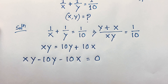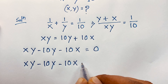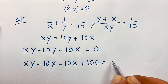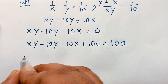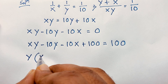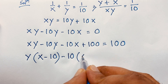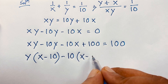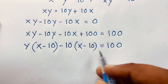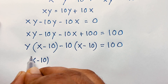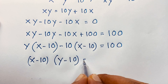I move the terms to one side. So here: xy minus 10y minus 10x equals 0. I add 100 to both sides. Now y is common, so taking y as common gives y times (x minus 10). And 10 is common in the other terms: minus 10 times (x minus 10) plus 100. So we get (x minus 10) is common, and factoring gives (x minus 10)(y minus 10) equals 100.